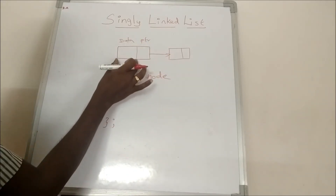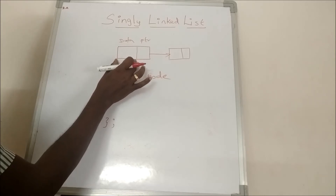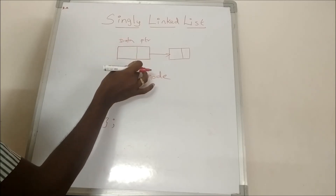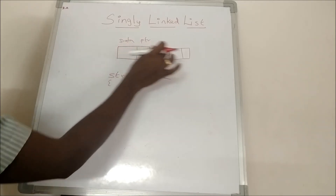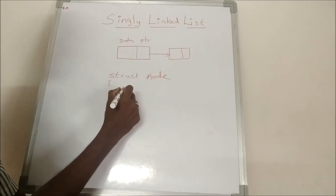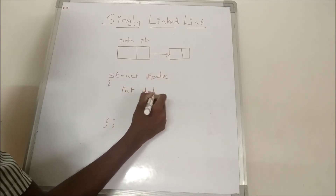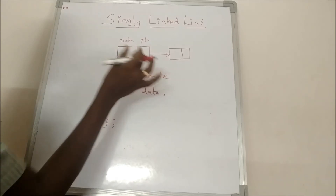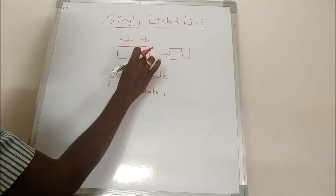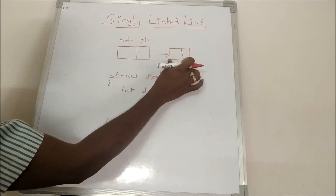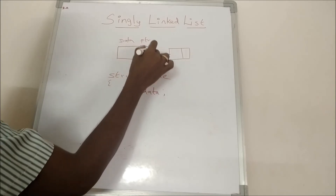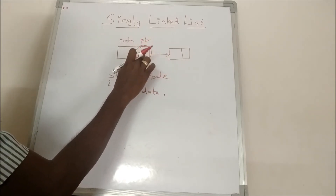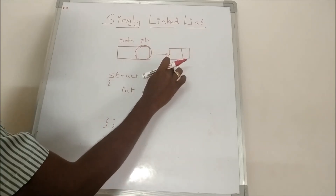One part of the node is exclusively for data and another part is exclusively for a pointer. The data may be an integer, float, character, or any combination. If the node stores an integer value, the data field is declared as integer. The second portion stores the address of the next node — so it is a pointer which stores the address of another node.